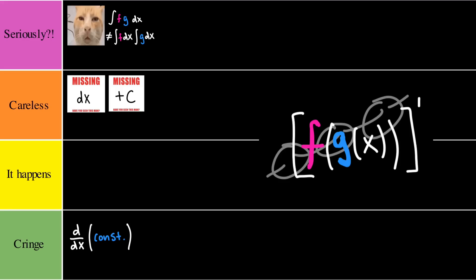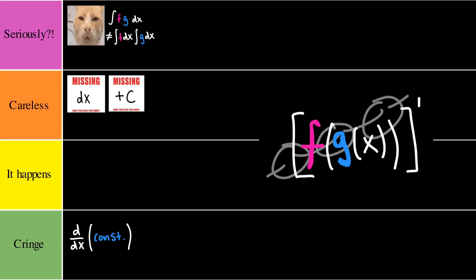Next, we have forgetting the chain rule. When you forget the chain rule, your derivative is going to be wrong. This would have to go into the seriously tier.